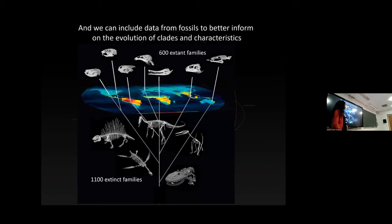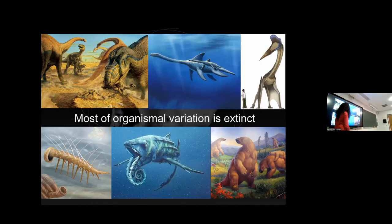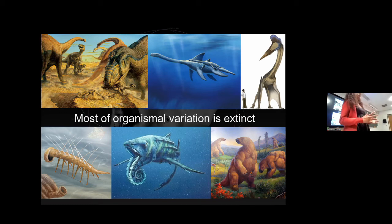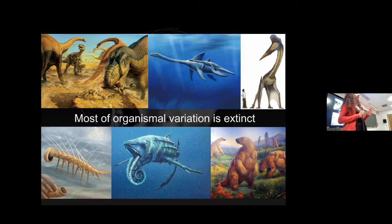The vast majority of morphological variation is extinct. All these examples are related to extant clades in some way, but they represent forms we would never imagine if we only thought about living species. This isn't all Cambrian or Mesozoic material — a sloth 10,000 years ago looked nothing like what we think of today. Simulations and empirical studies, like Graham Slater's work, show that even a small proportion of fossil data hugely improves reconstruction of evolutionary rate parameters.